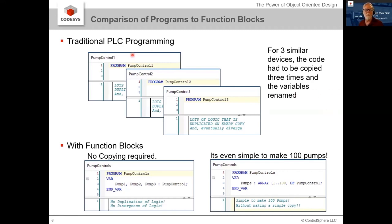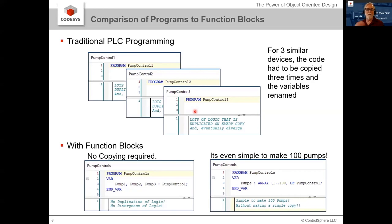Originally, if we created a program to control a pump, we'd create some global variables, write a program, and use those global variables. But when we needed to control two pumps, we'd have to duplicate the global variable list, come up with a naming convention, copy the program, and rename all the variables. Then we'd figure out why it doesn't work because we forgot something, or get a call at midnight because some aspect wasn't updated. And for a third pump, you'd go through that whole process again. Some people created spreadsheets and automation to help, but IEC 61131-3 function blocks are really the best solution.